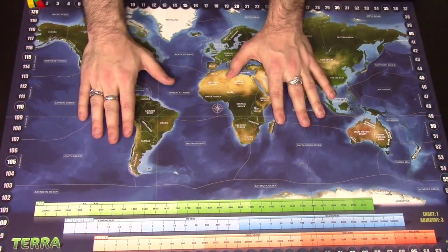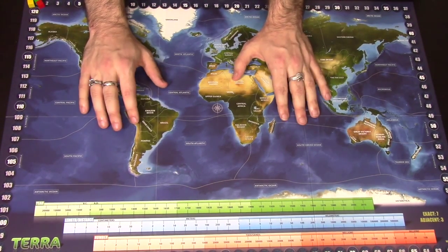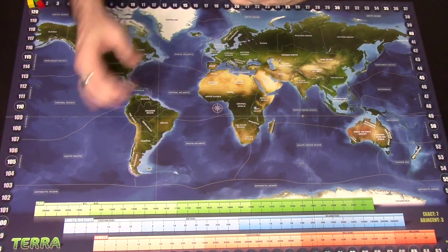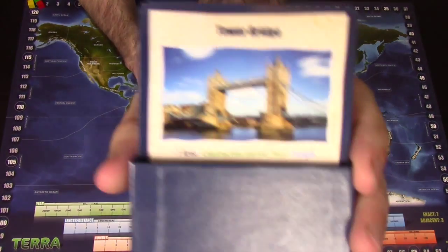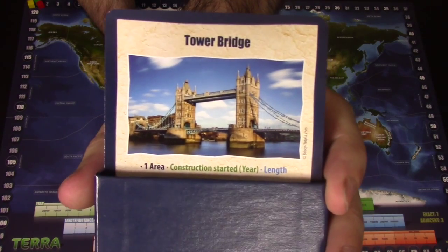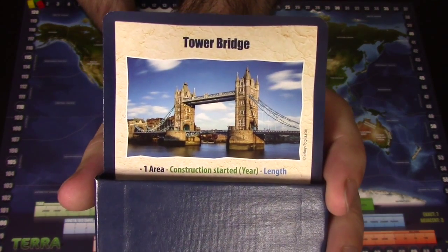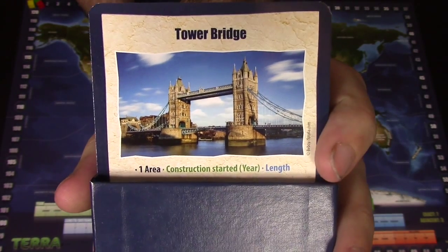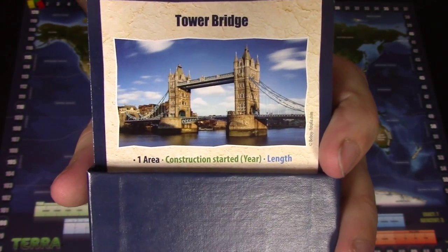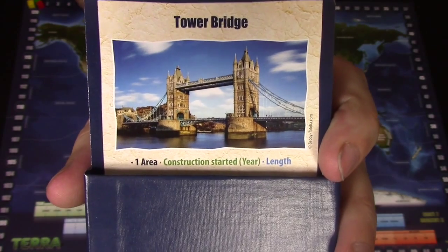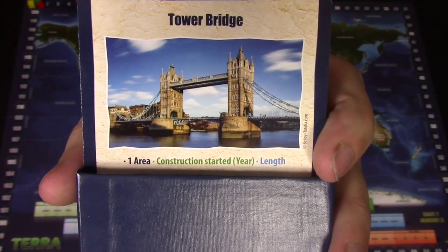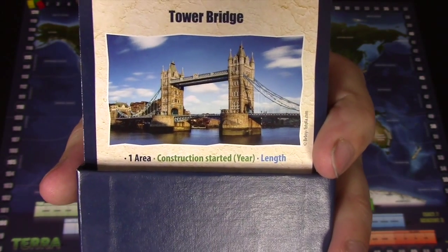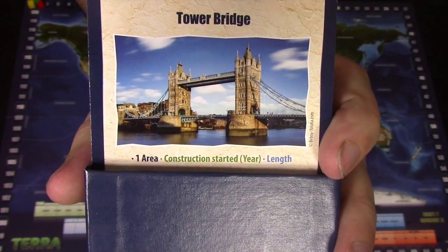And what's going to happen in Terra is you're going to get a question. For example, I'm not going to spoil the answers here, but for example you've got a card here that says Tower Bridge. What we want to know from Tower Bridge, if it's your turn to go, we want to know where it is. If you notice at the bottom there it says one area. We also want to know when it was built, when did construction start. And we also want to know the length in meters.